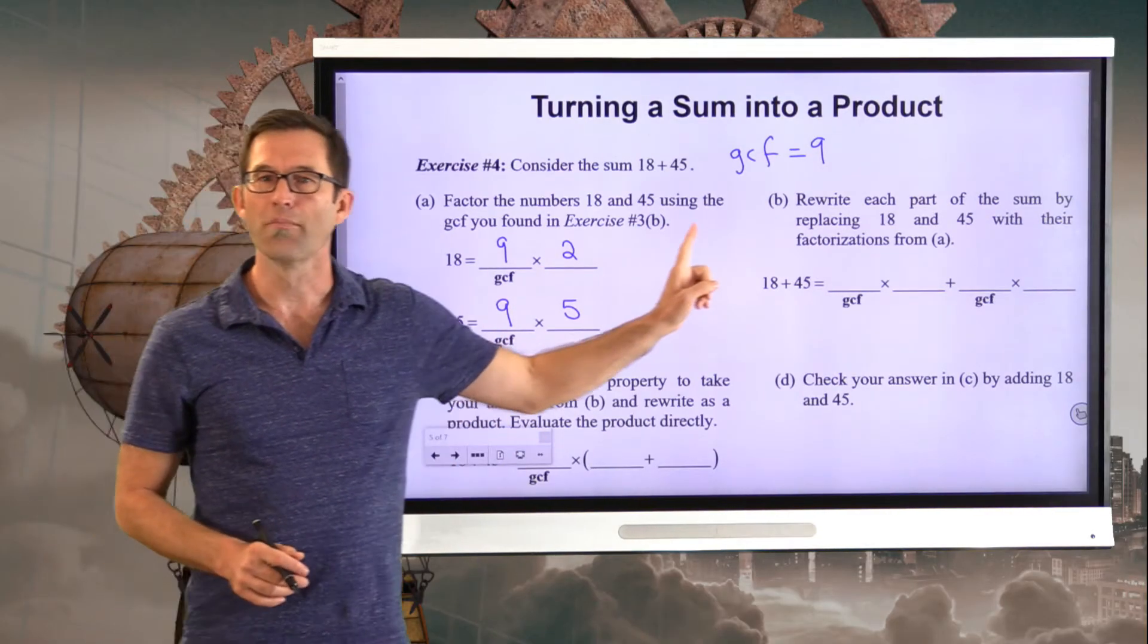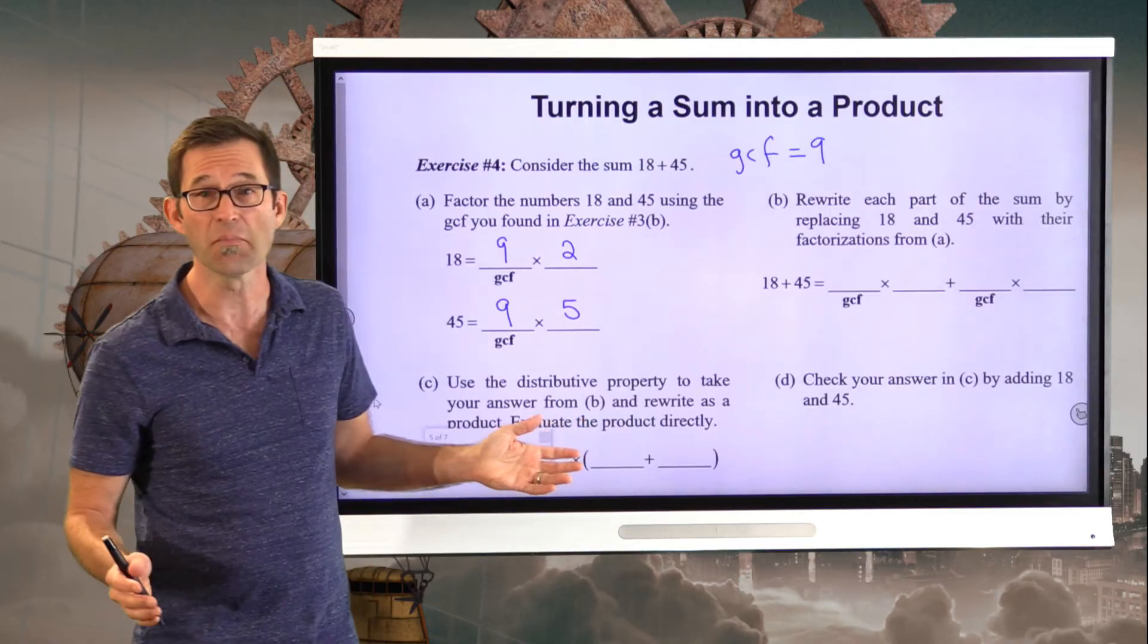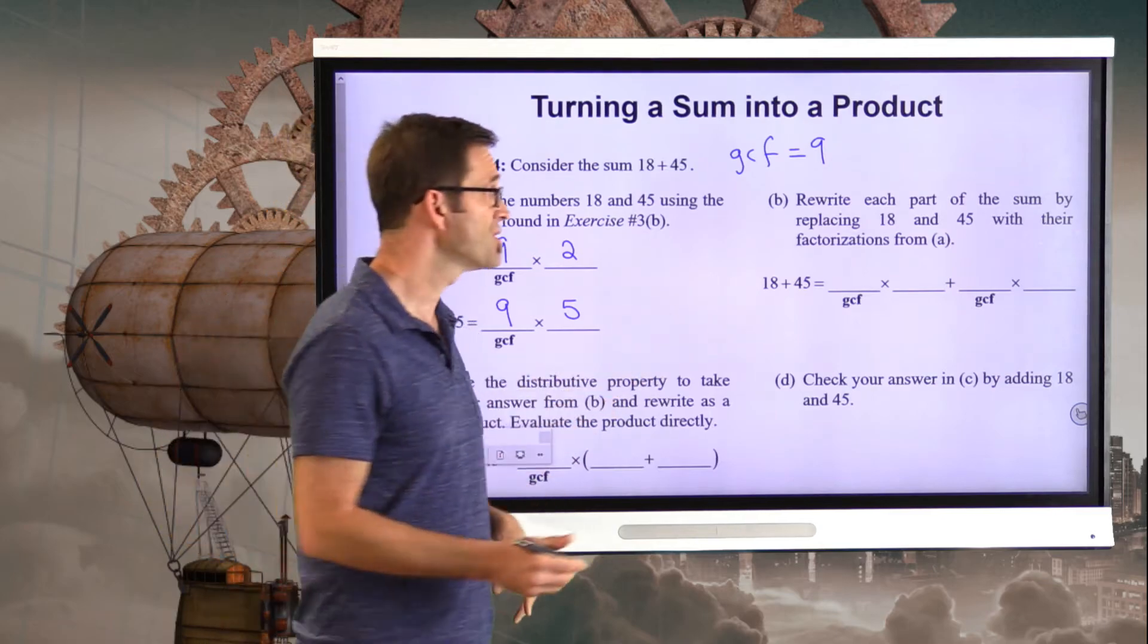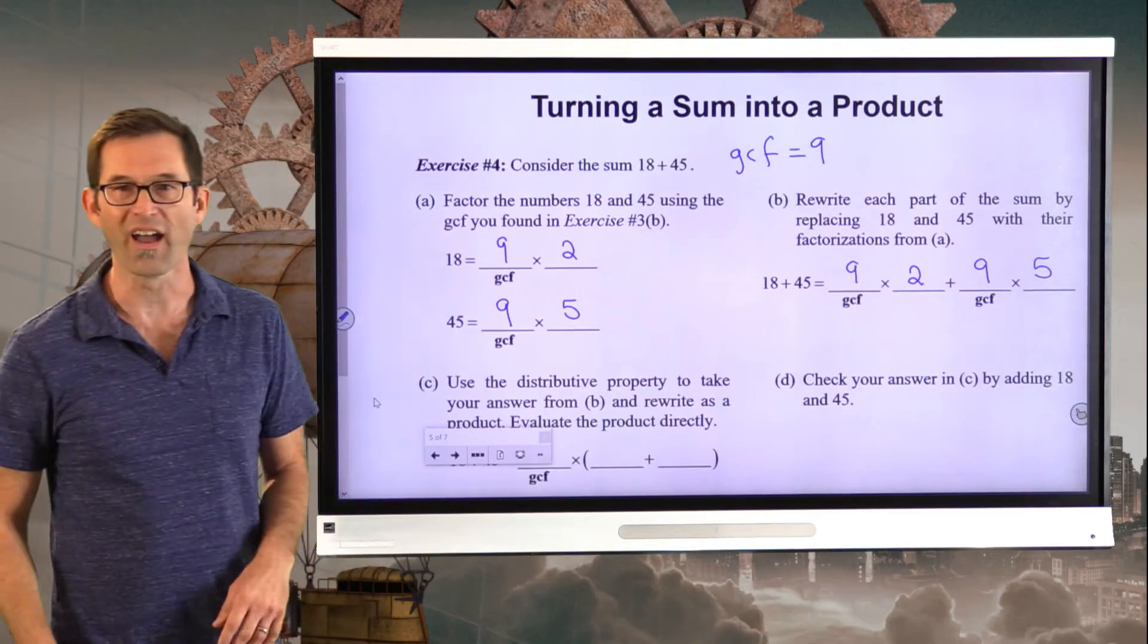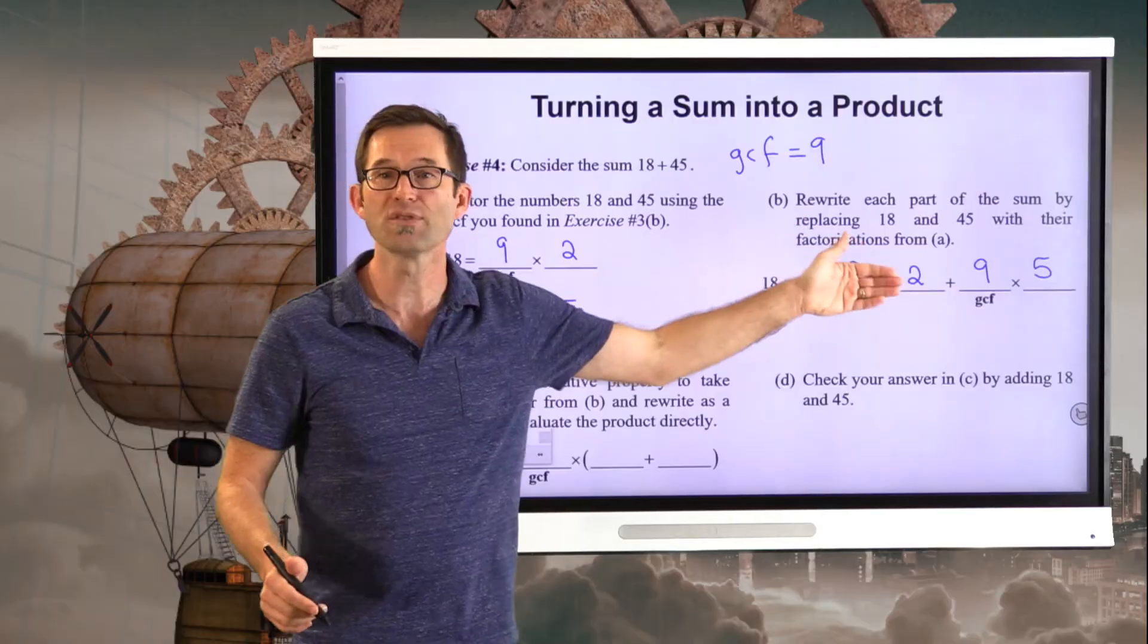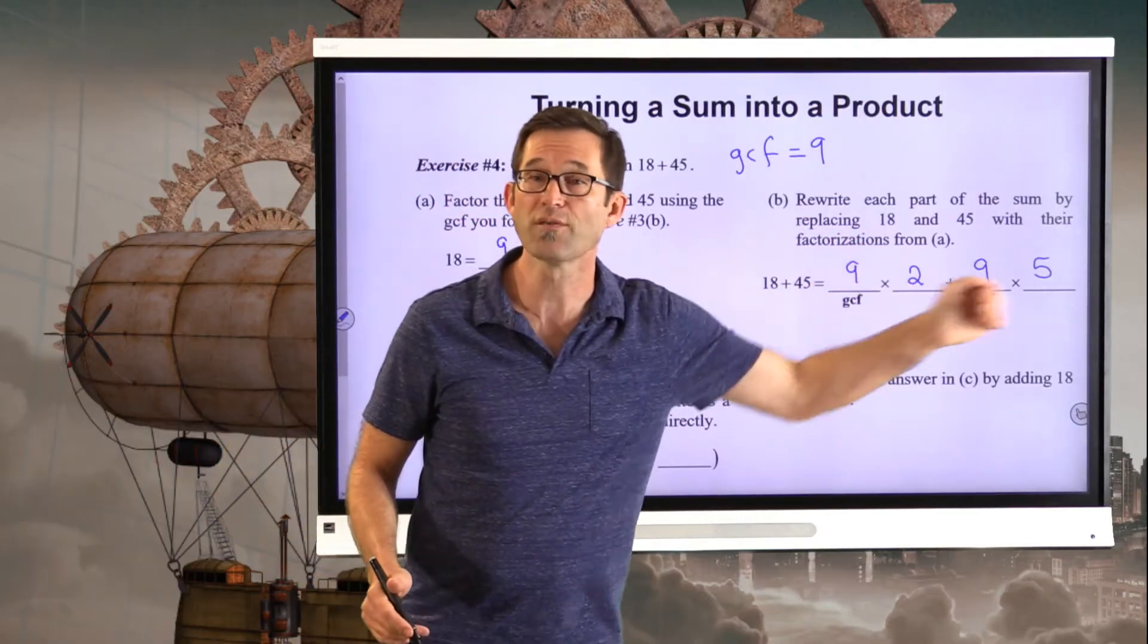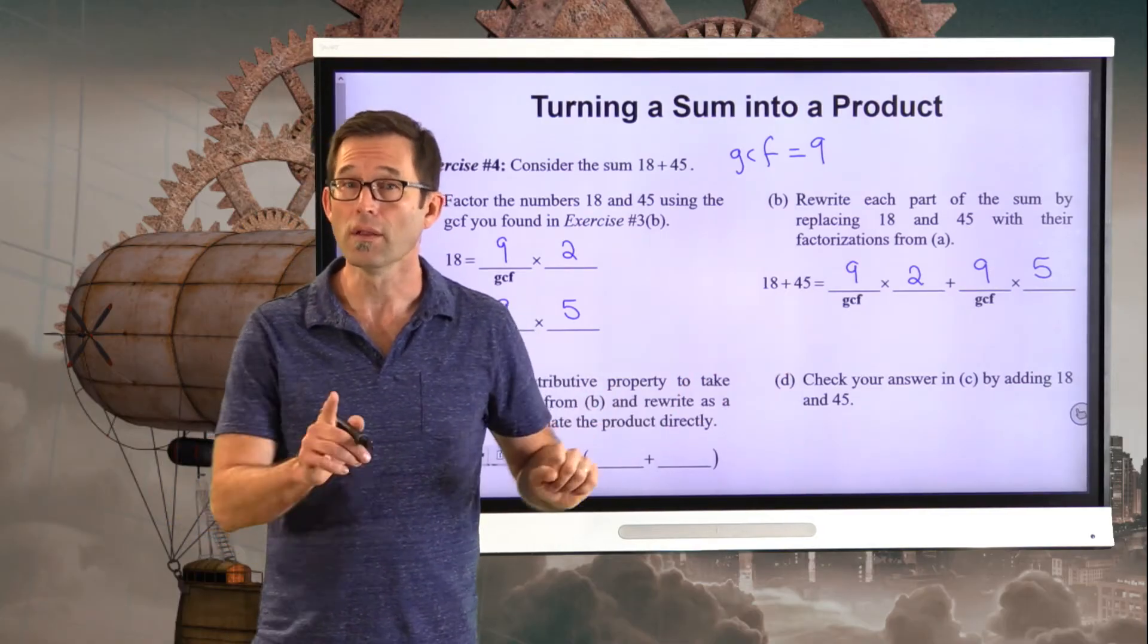Letter B asks us to rewrite each part of the sum by replacing 18 and 45 with the factorizations from A. This is really simple. 18, we're just going to replace with 9 times 2. And 45, we're going to replace with 9 times 5. Again, I've just replaced 18 plus 45 with 9 times 2 plus 9 times 5. We're well on our way to turning this sum into a product.